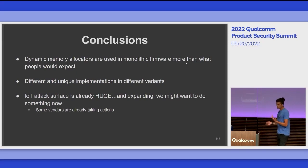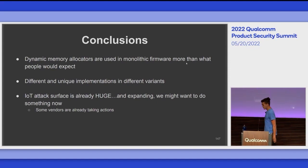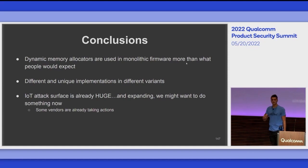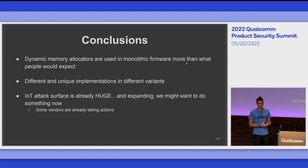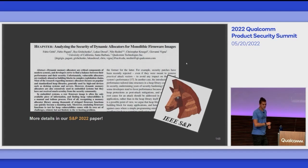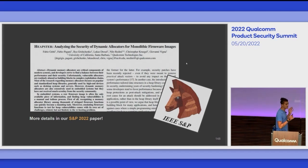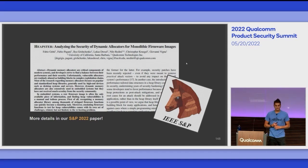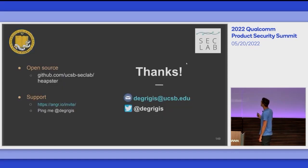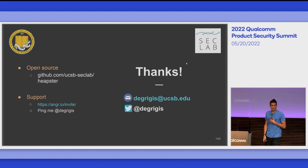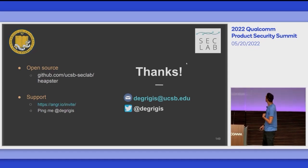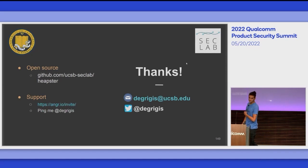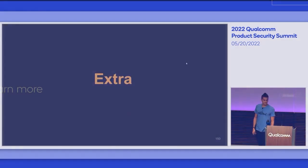I'm aware that some vendors like Qualcomm — I was part of some conversations last summer as an intern — are already trying to fix this issue and are interested in knowing how to prevent heap overflows from corrupting the heap state. More details are in our S&P paper. I simplified a lot here because there were tons of technical details, but if you're interested you can check it out. Everything is open source on GitHub. I'm active on the angr Slack channel — you can ping me there, email me, or reach me on Twitter. That was my time. Thank you so much.